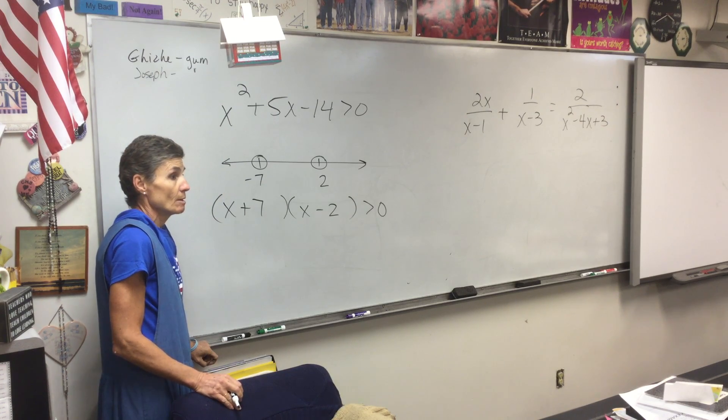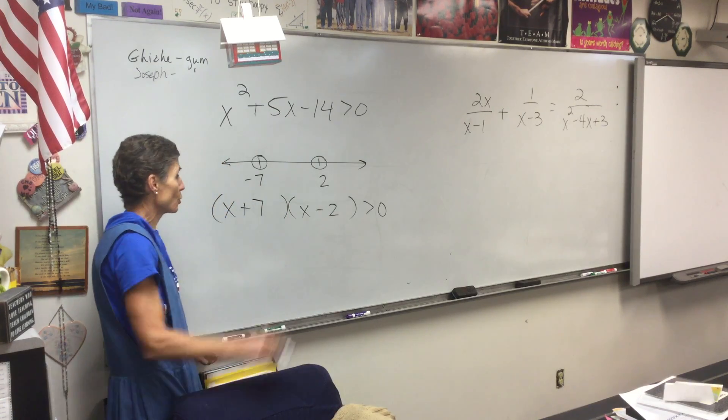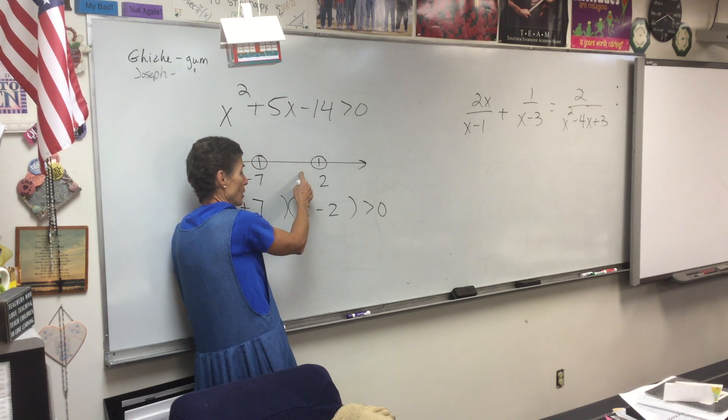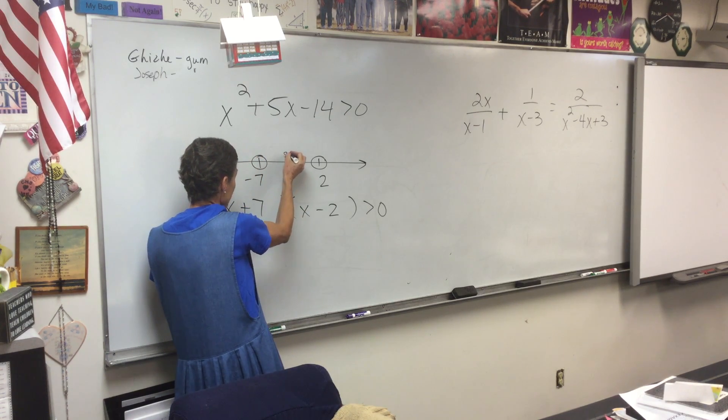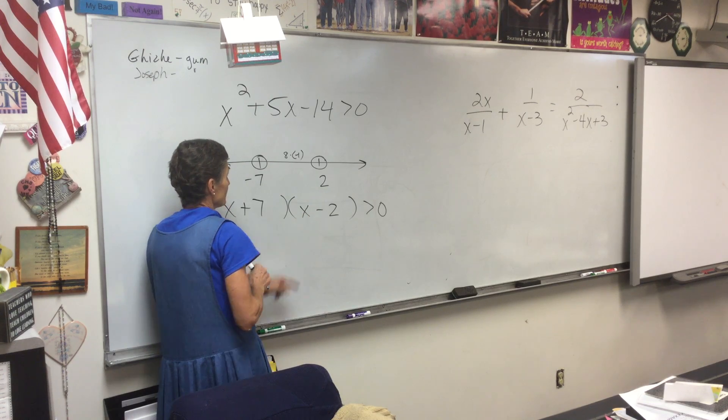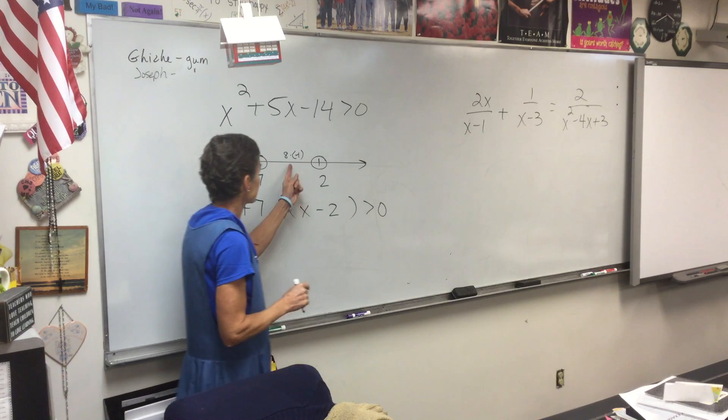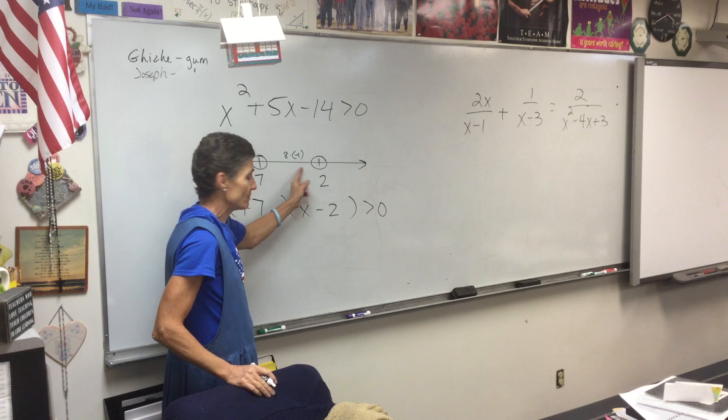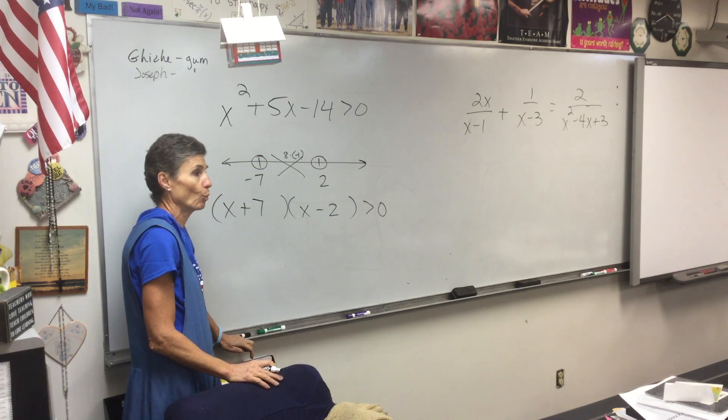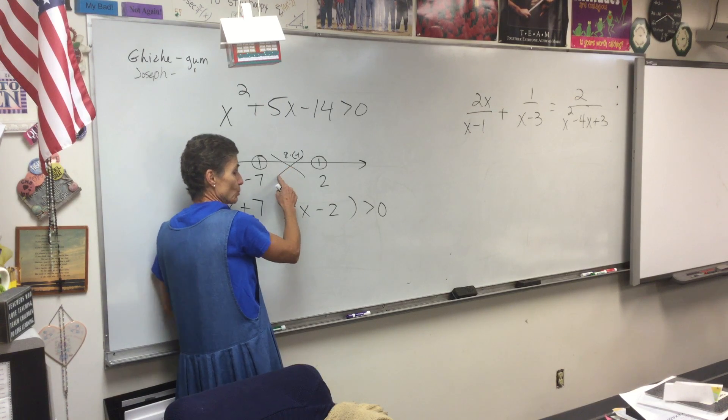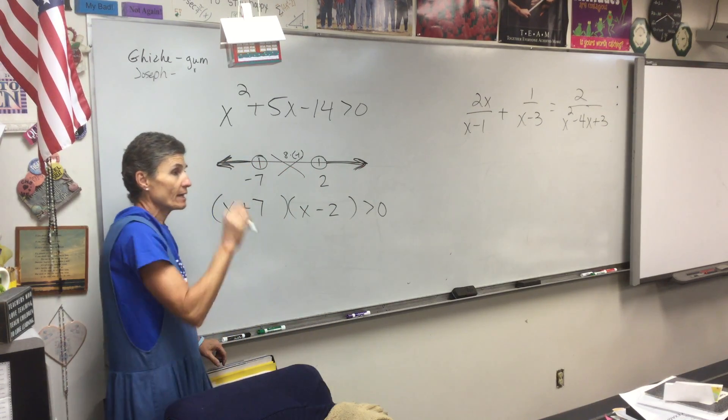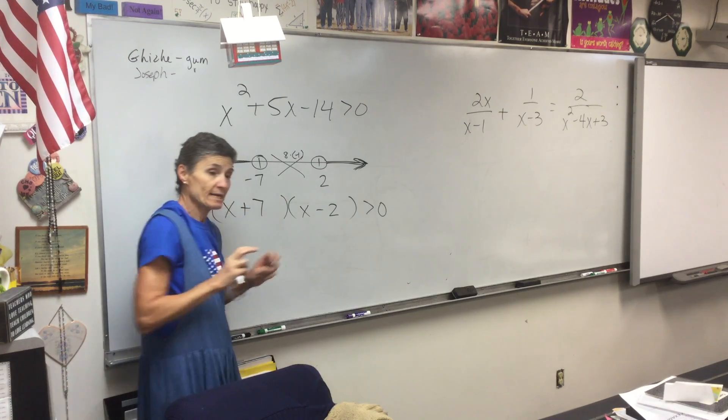Now what do I do? Pick a number, any number except these two. One is here. I'm going to put one in and if I put one in, I get eight times negative one. What is eight times negative one? Negative eight. Is negative eight bigger than zero? No. So this didn't work. This did not give me an answer that I wanted. So I'm going to cross this off. It doesn't work. If that one doesn't work, then what does that mean? This one will and this one will, because the working, not working sections alternate.